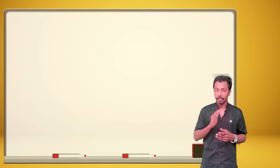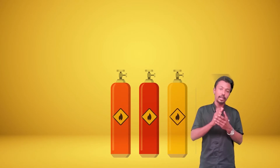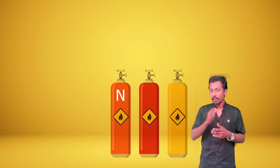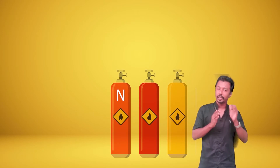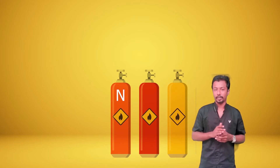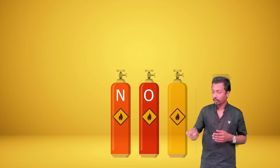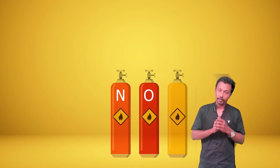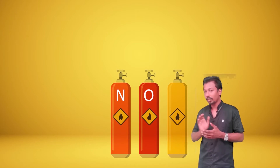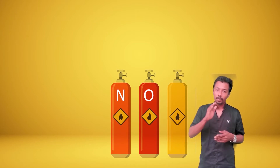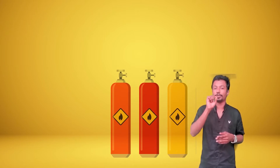We will understand partial pressure. Here we have three containers. In the first container, we fill nitrogen. The pressure exerted by nitrogen on the walls is the partial pressure of nitrogen. In the second container, we fill oxygen — that gives us the partial pressure of oxygen. In the third container, we fill both oxygen and nitrogen together.